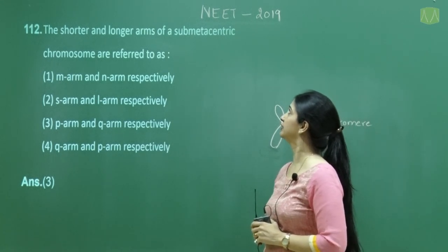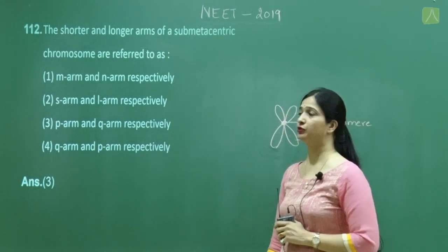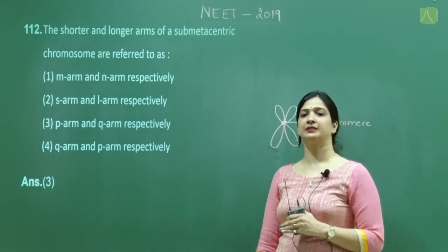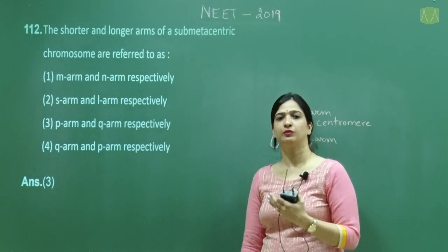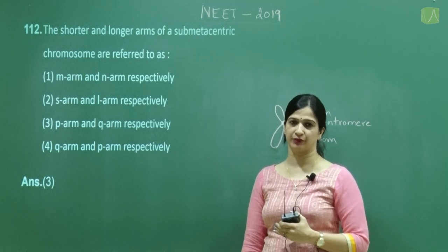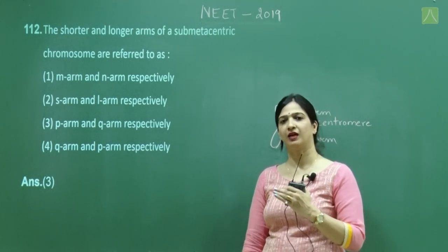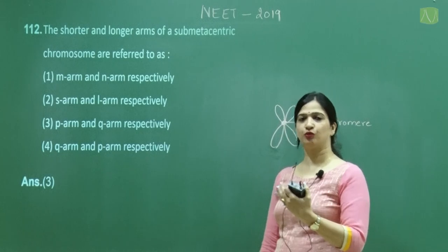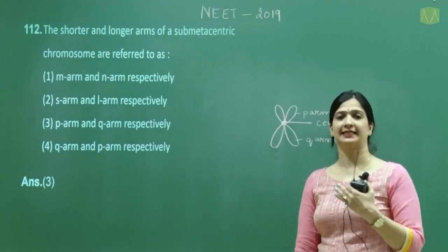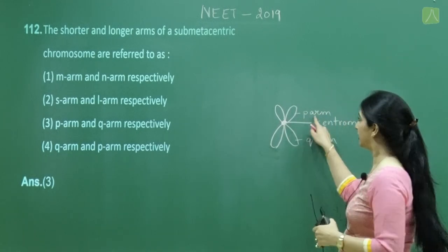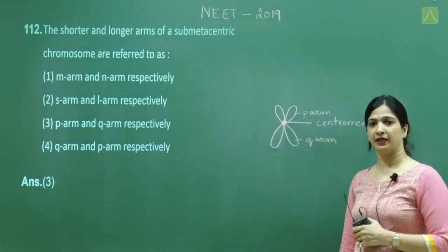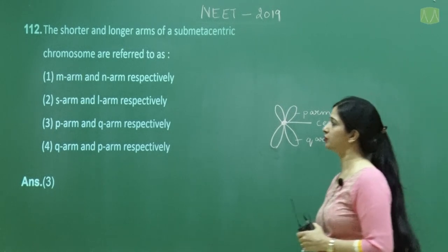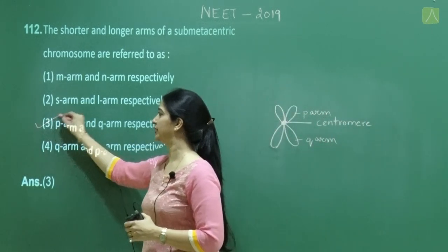Question number 112: The shorter and longer arms of a submetacentric chromosome. In submetacentric chromosomes, the centromere is slightly away from the center, so the two arms are unequal. The shorter arm is known as the p arm and the longer arm is known as the q arm. The correct answer is option 3.